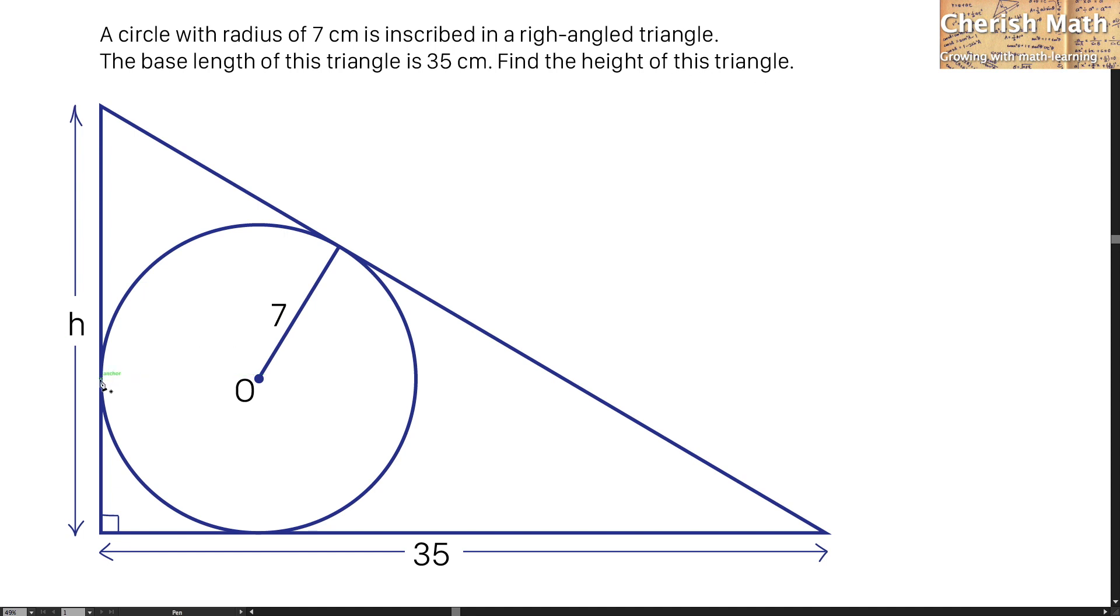Let me connect from the point of tangent to the center of the circle, and it forms a square here by labeling the length. This is going to be 7 cm, and this part is the same, 7 cm.